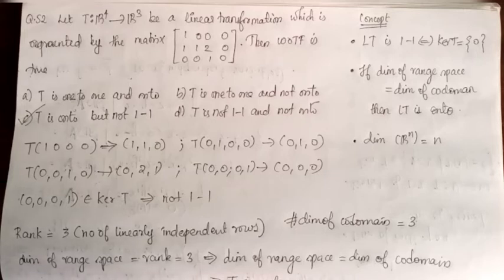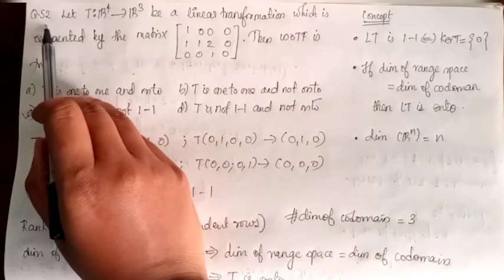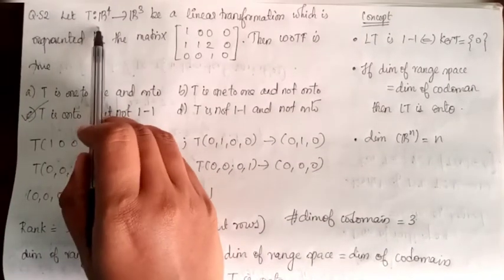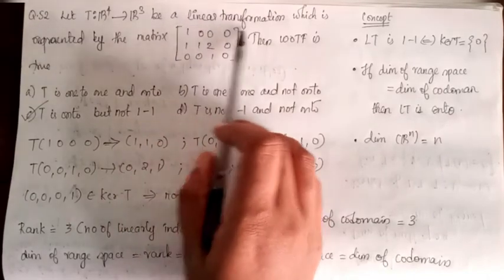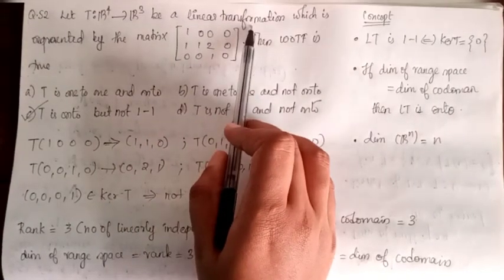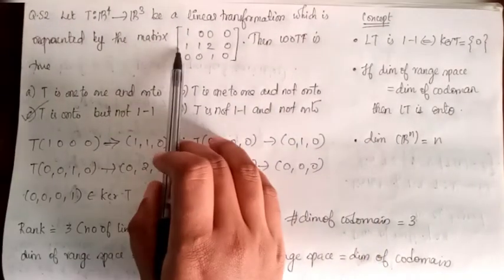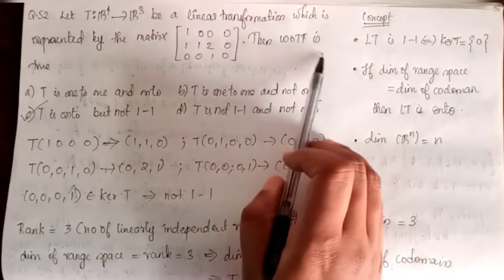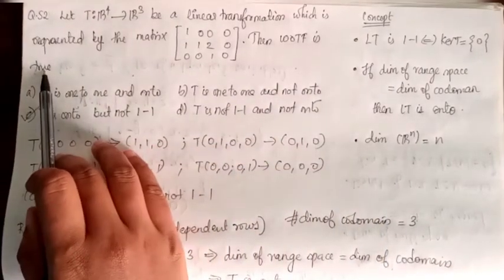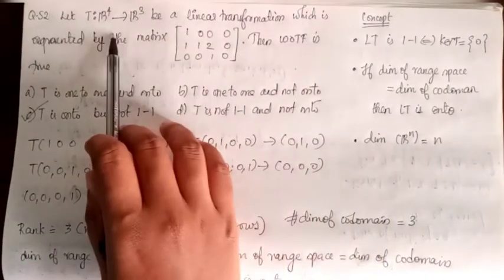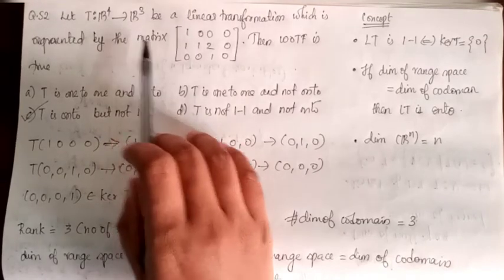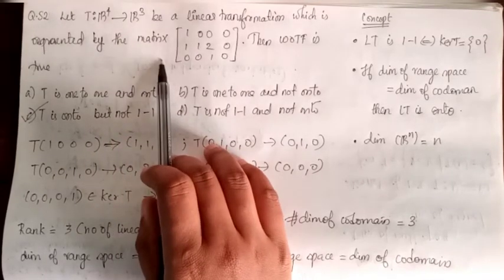In the next question, Kerala 2018 question: Let T from R4 to R3 be a linear transformation represented by a matrix. Which of the following is true? A linear transformation from R4 to R3 — that would be the matrix used to represent it.